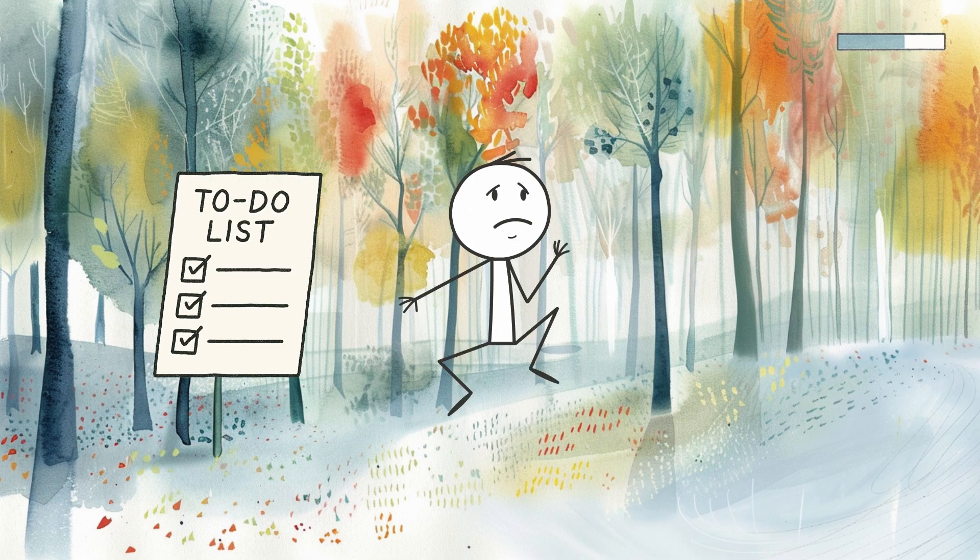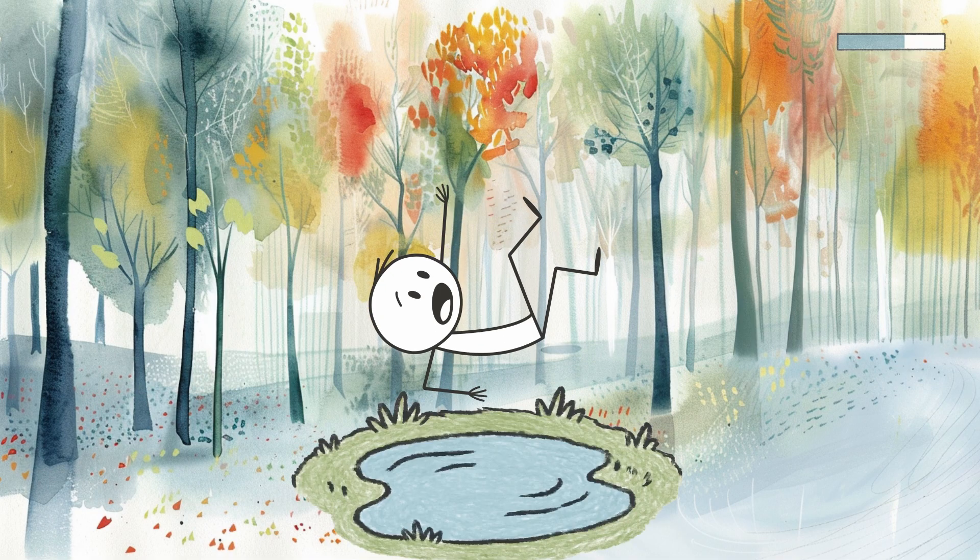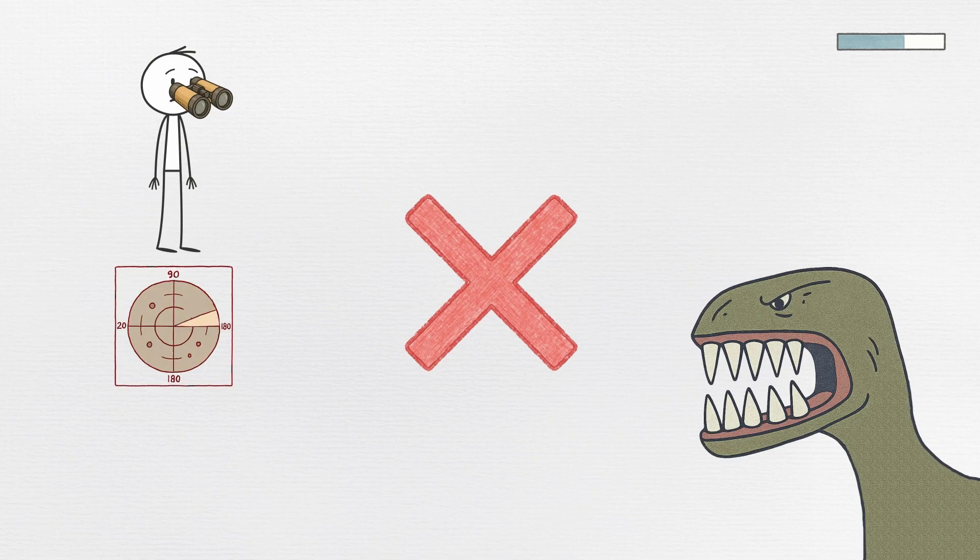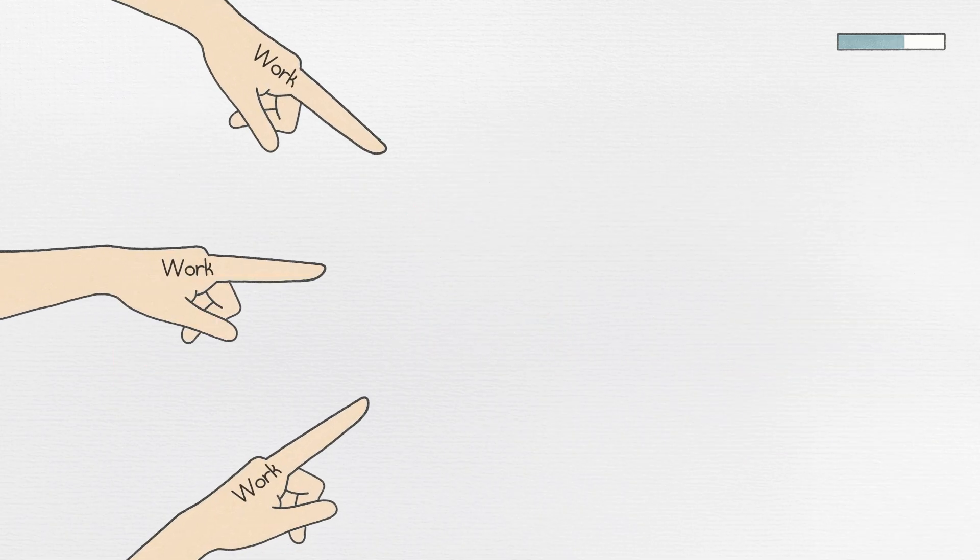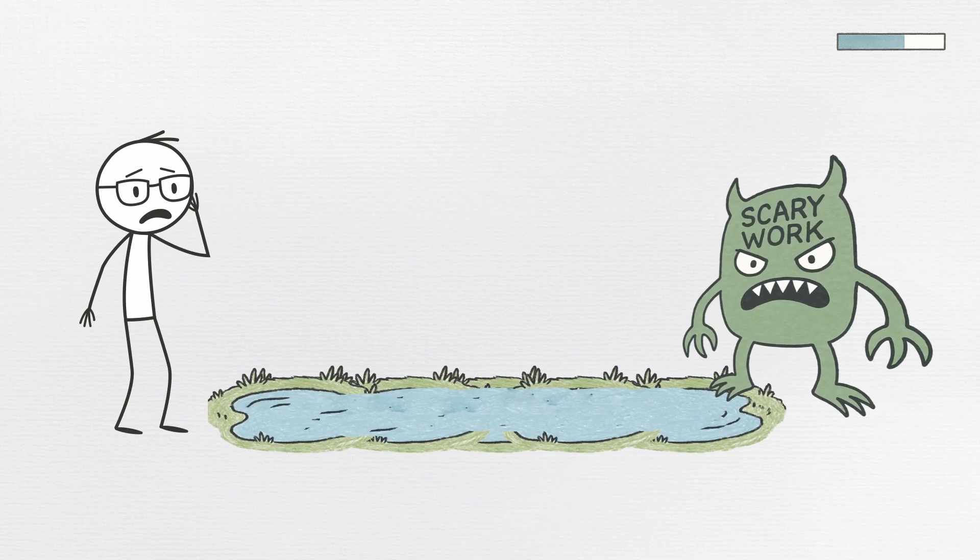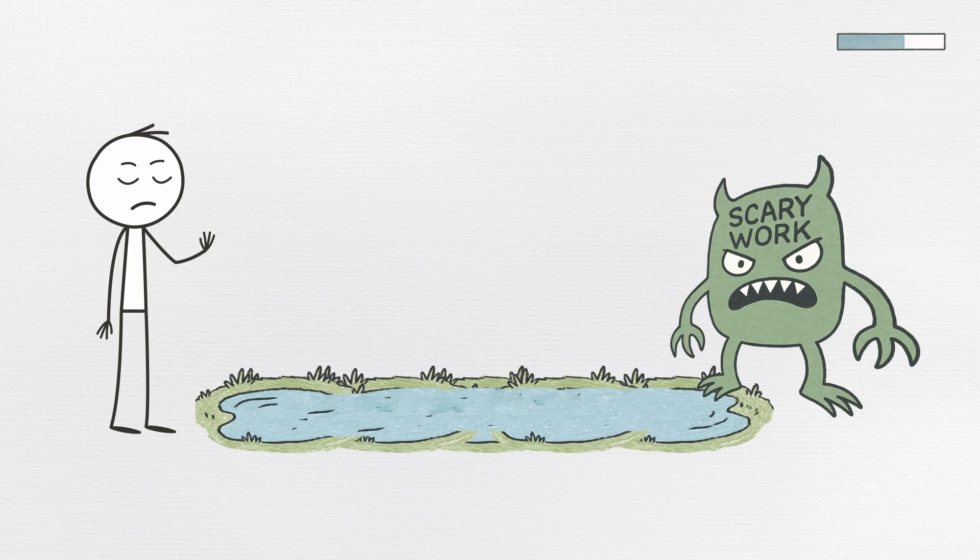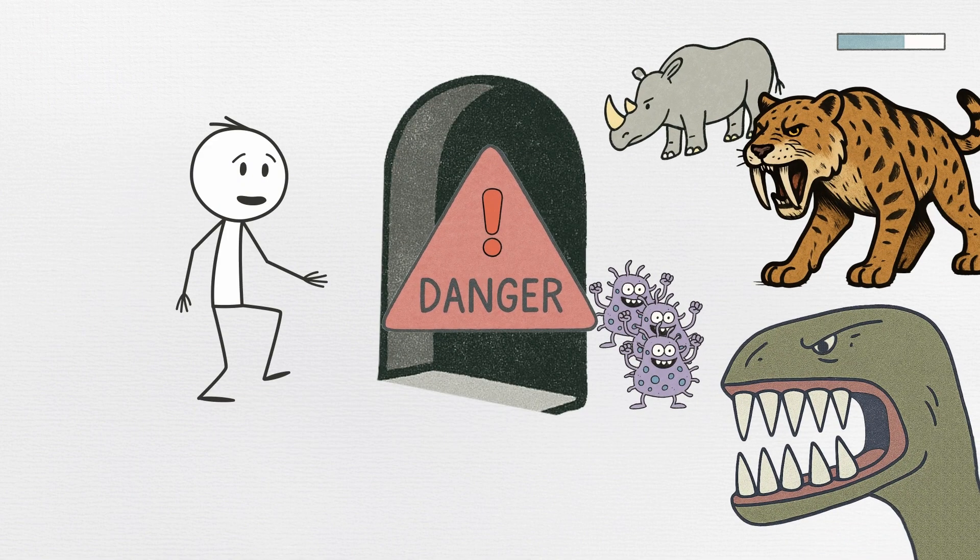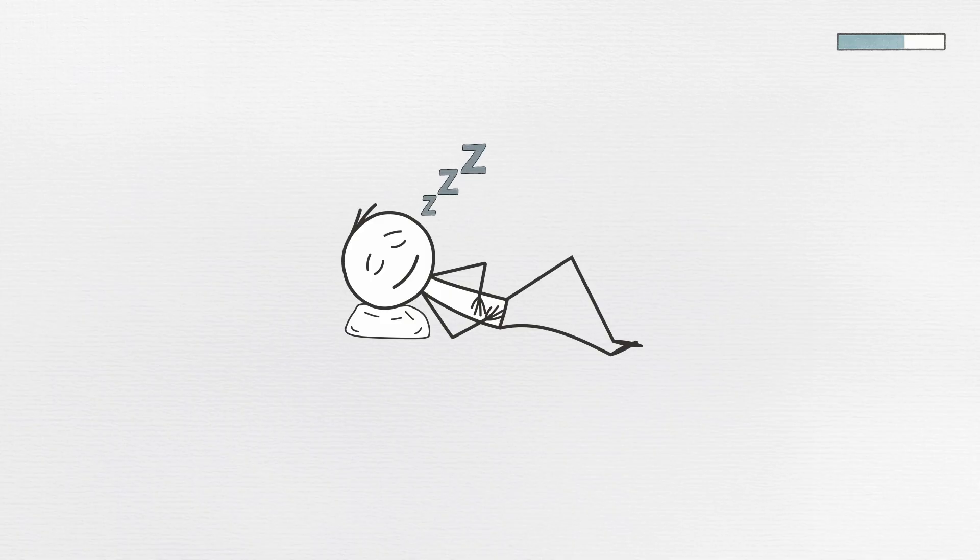The irony is that avoiding the task often creates more real danger than facing it would have. But your threat detection system doesn't think that far ahead. It's focused on immediate survival, and right now, that means staying as far away from the scary thing as possible. It spotted a threat, you avoided it, and now you're safe. Mission accomplished. At least until tomorrow.